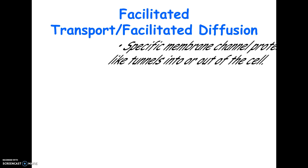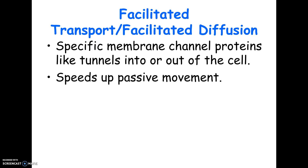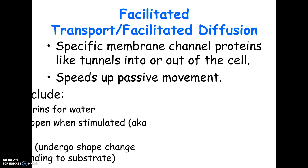A third type of passive transport is called facilitated diffusion. Facilitated diffusion is still moving things from higher to lower concentrations, but instead of going through the phospholipid bilayer, they go through a membrane protein. A lot of people get this wrong on the test — they think facilitated diffusion is an example of active transport requiring energy. It does not require energy. It is passive.